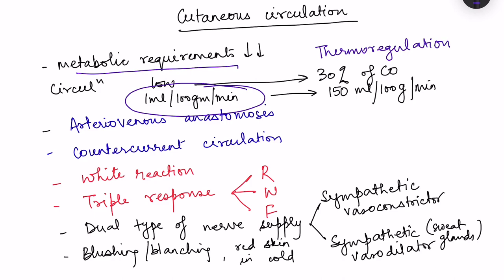In a hot environment where heat has to be lost from the body, cutaneous circulation can increase to as much as 150 ml per 100 gram per minute. In cold, where vasoconstriction occurs, it can be as low as 1 ml per 100 gram tissue per minute. This concept of thermoregulation is dealt with in the video on temperature regulation. Here we will deal with certain special characteristics of cutaneous circulation.